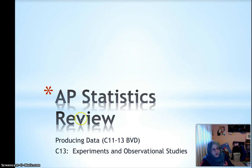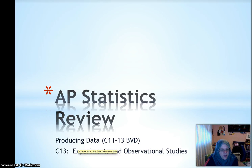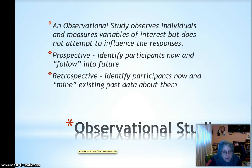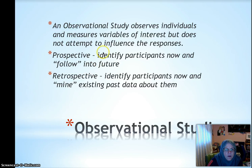Today we're reviewing Chapter 13, Experiments and Observational Studies. This is the last of the three different ways of producing data that we discussed. We had simulation in Chapter 11, survey and sampling in Chapter 12, and then this.